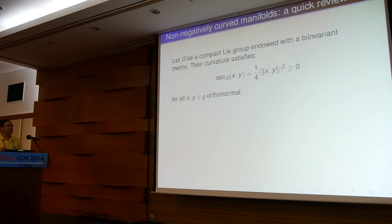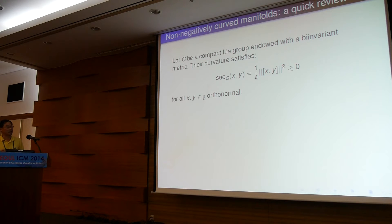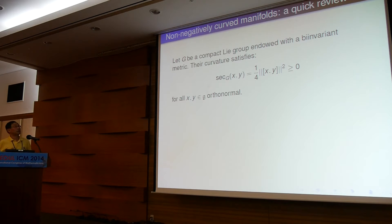If we start with a compact Lie group with a bi-invariant metric, it's classical — you can calculate the sectional curvature in two directions x and y, given by such a formula. It's like a Lie bracket in the algebra, then you take the square. Therefore, this is non-negative for whatever bi-invariant metric when the group G is compact.